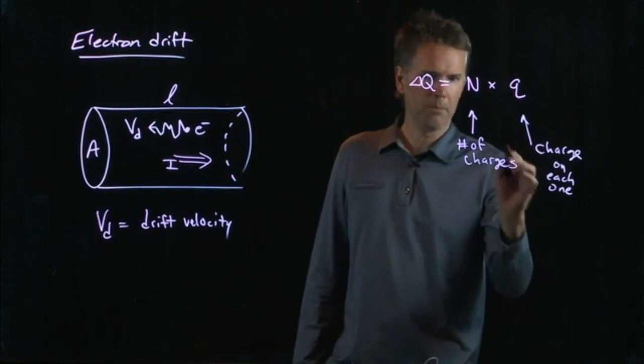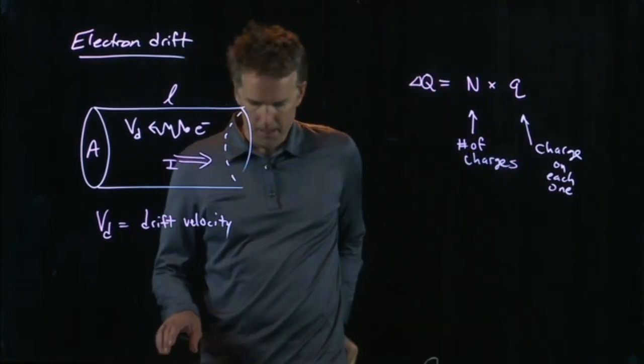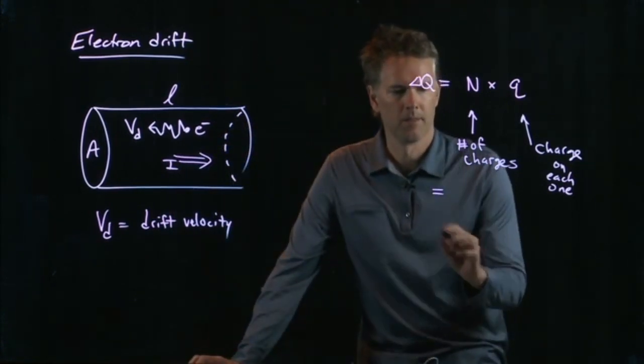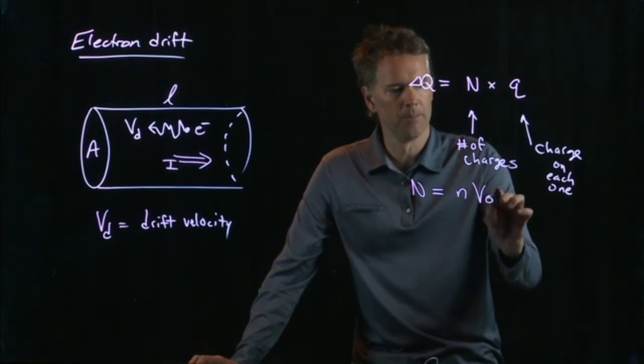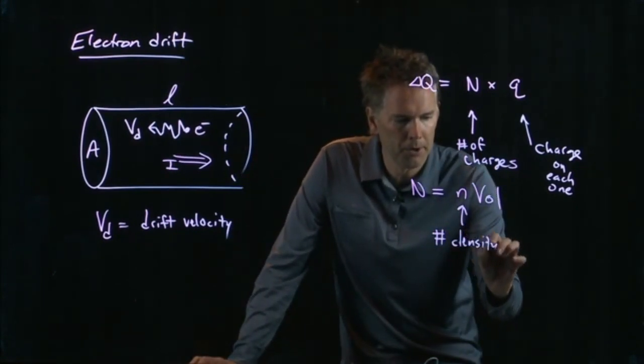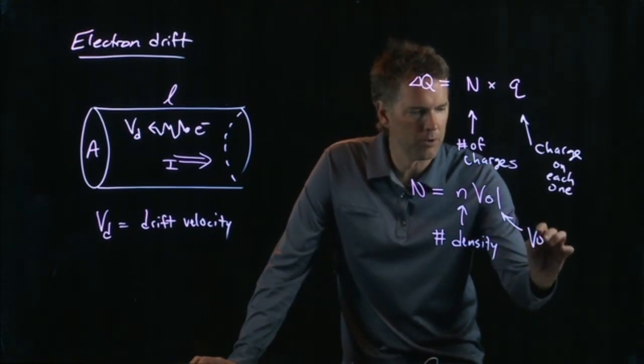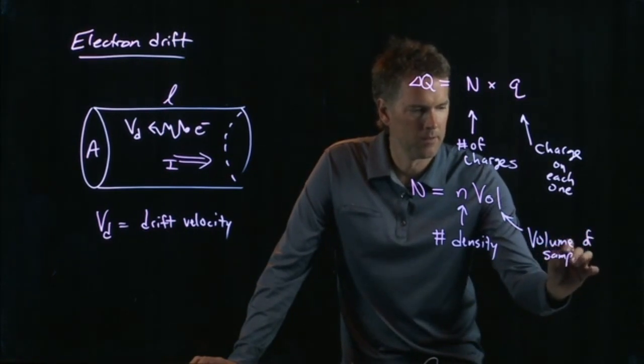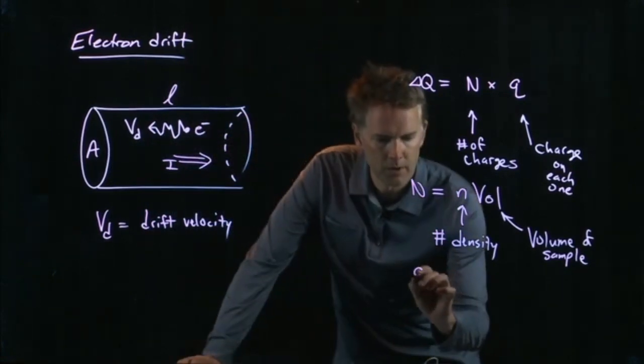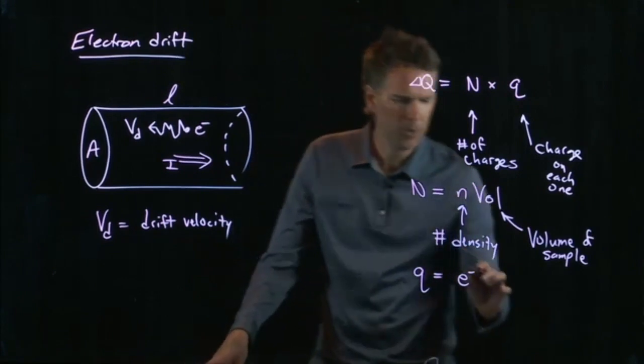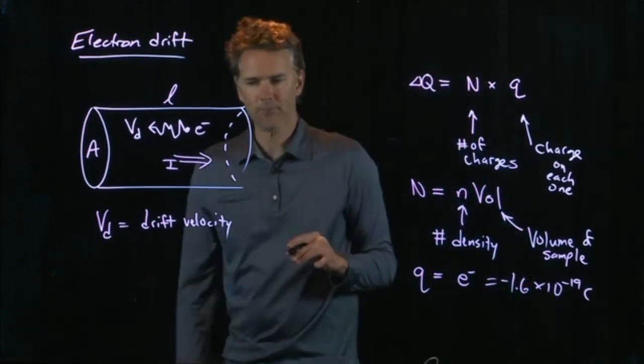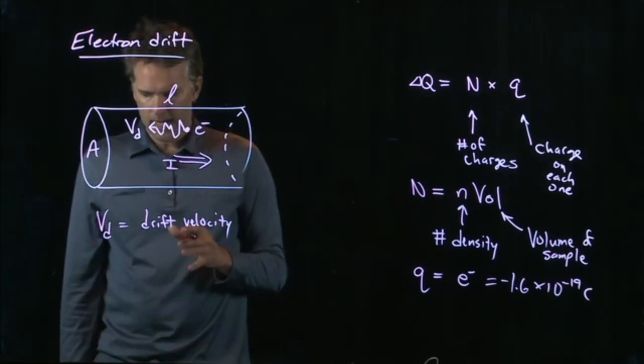But the number of charges we can write as something else. We can write the number of charges as a number density times a volume. And this N is the number density. It's the number per unit volume, and this is the volume of our sample. Q is the charge on each one, and that is one electron. And we know what that is. That's 1.6 times 10 to the minus 19 Coulombs, and it's got a negative sign on it.